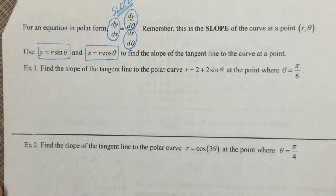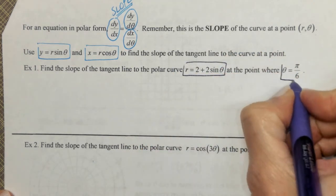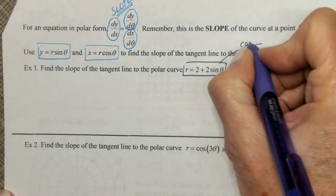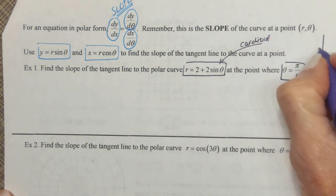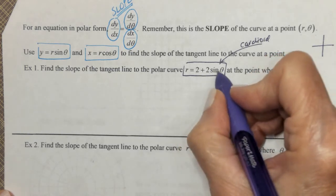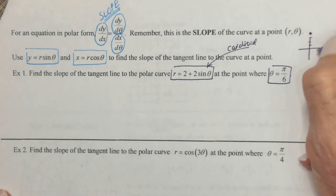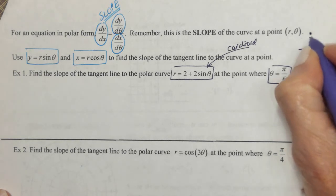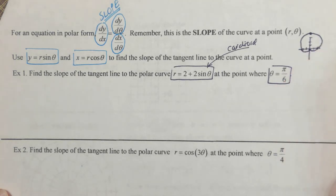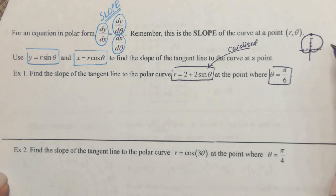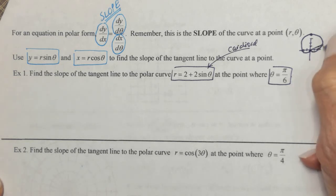Let's find the slope of the tangent line to this curve at the point where θ = π/6. I know that's a cardioid. The bulk of it is on the positive y-axis — I would go up 4 and side to side 2. It goes through the pole, so the little graph looks like a cardioid. We want to find the slope when θ = π/6 — the slope of that tangent line.